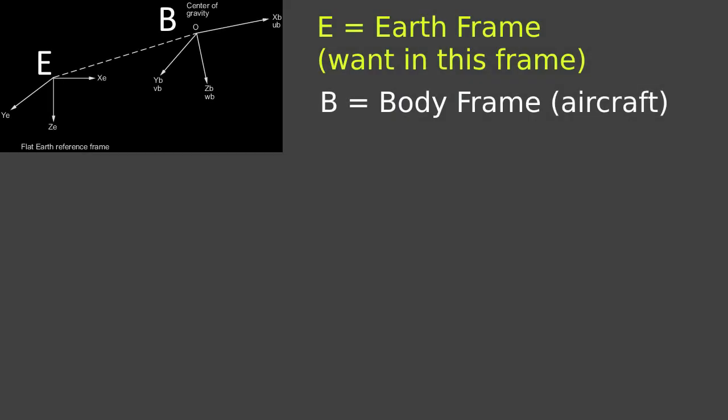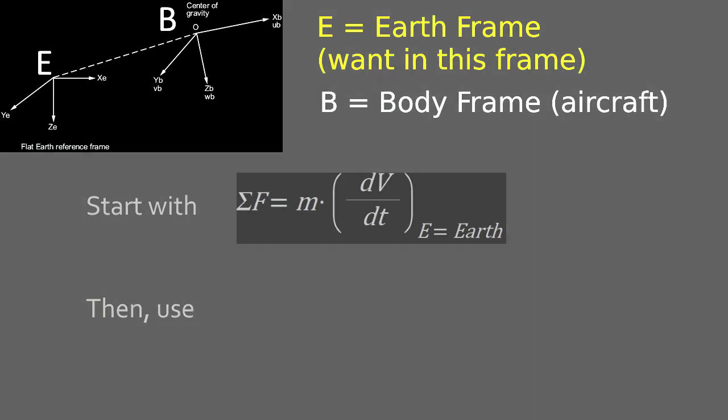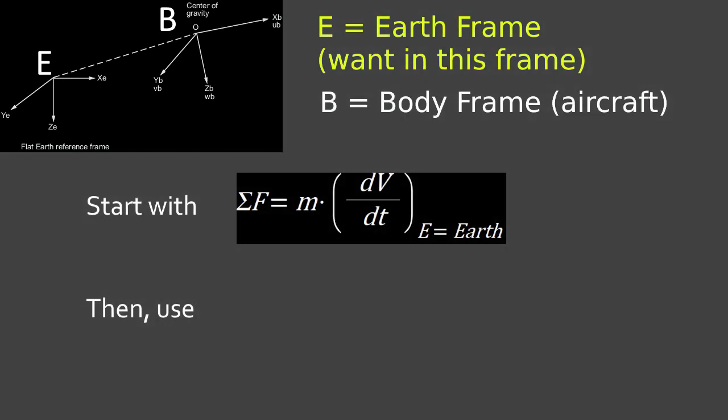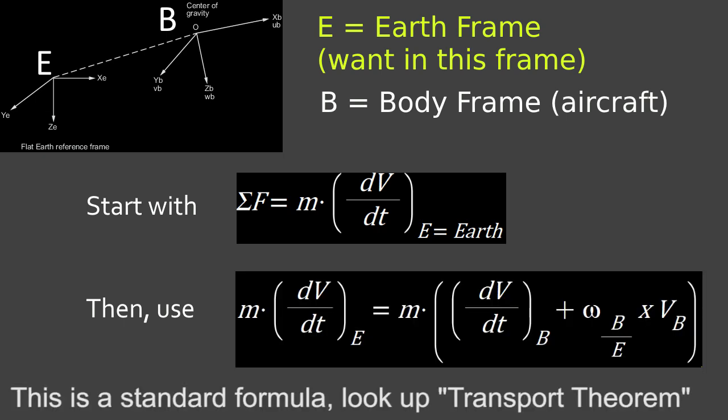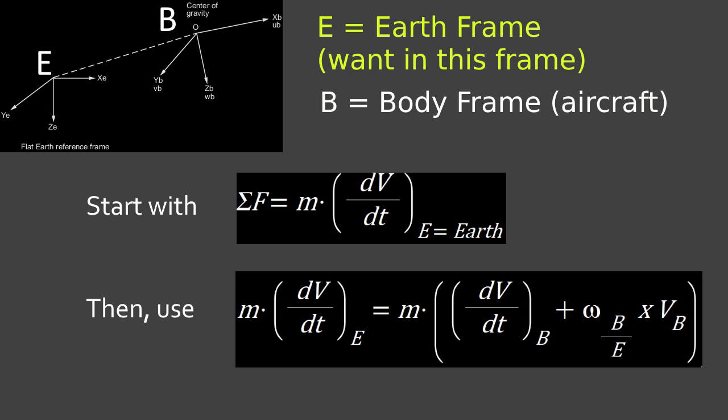Let's derive the forces. We want to measure them in the earth frame, and the forces are actually along the body frame of the airplane, so here we have to use the transport law. Let's begin with F equals mass times dV over dt in the earth frame. Then we have to use the transport theorem, so it'll become mass times velocity derivative in the earth frame equals in the body frame plus Omega of the body relative to earth multiplied by VB. This is the transport theorem.